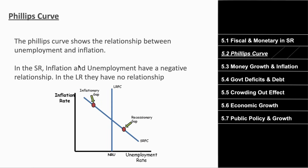Now let's talk about the Phillips curve. The Phillips curve is just a relationship between inflation and unemployment. It's a simple graph — on the x-axis we have the unemployment rate, on the y-axis we have inflation rates. We have two different lines. The negatively sloping line is the short-run Phillips curve. It shows that inflation and unemployment have a negative or inverse relationship, meaning the higher the inflation in the short run, the lower the unemployment rate.